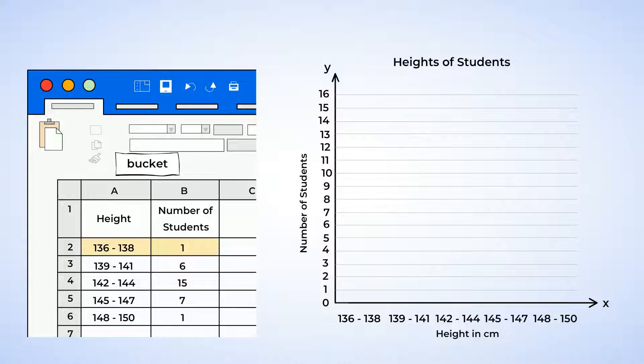136 to 138 centimeters, and that's just one person. So the height of the bar of the histogram has to match the number of the values in each bin. So we draw the bar up to one.